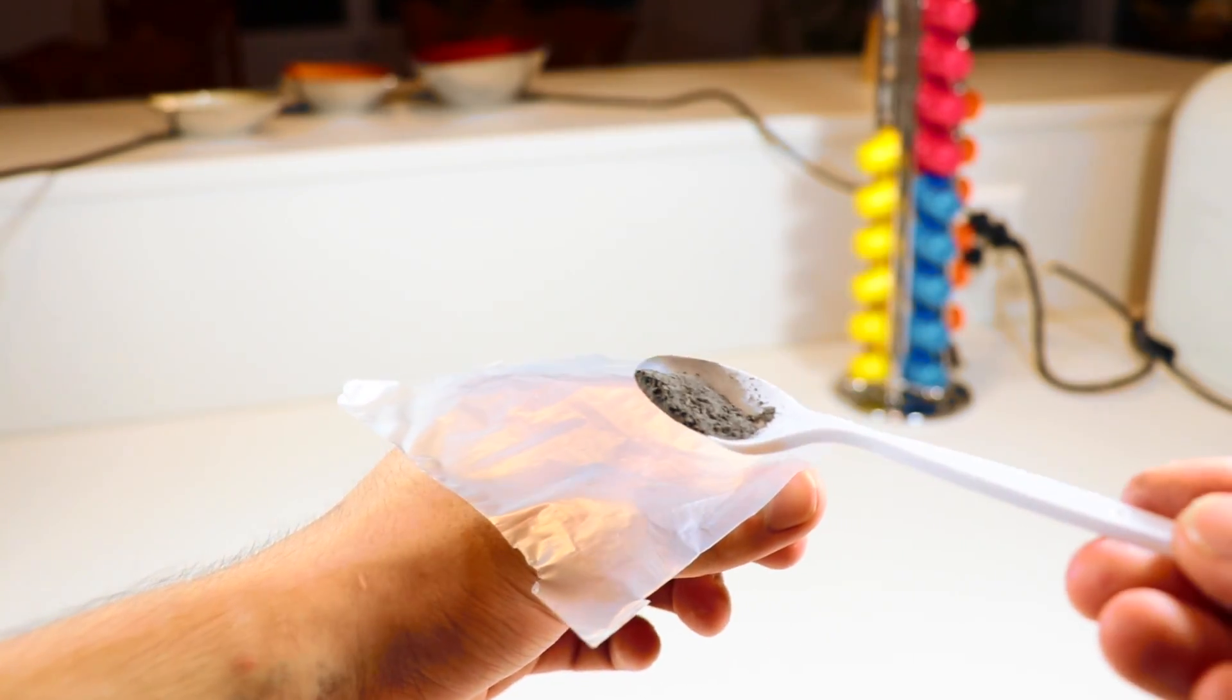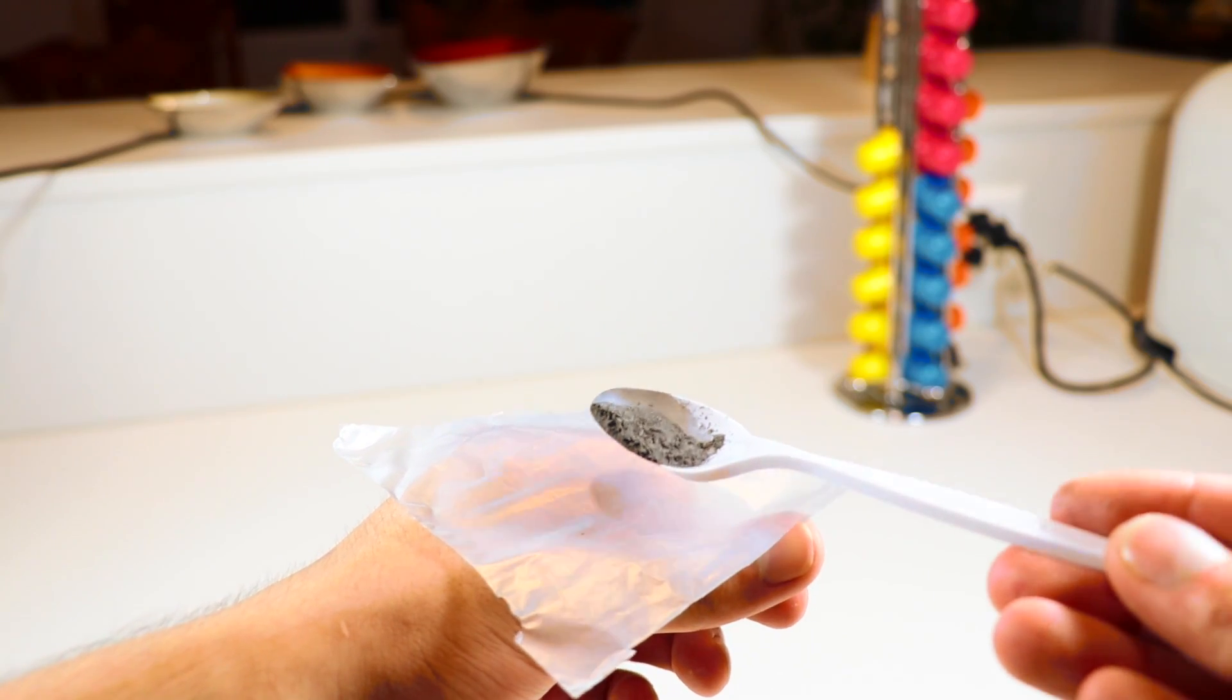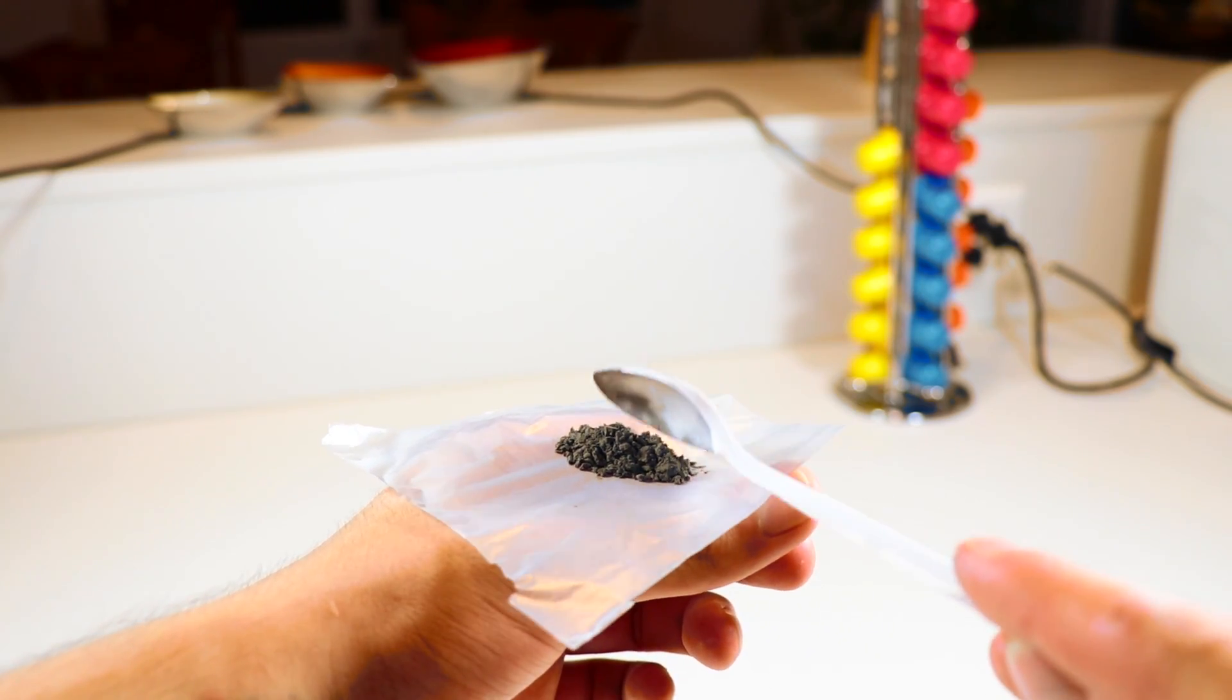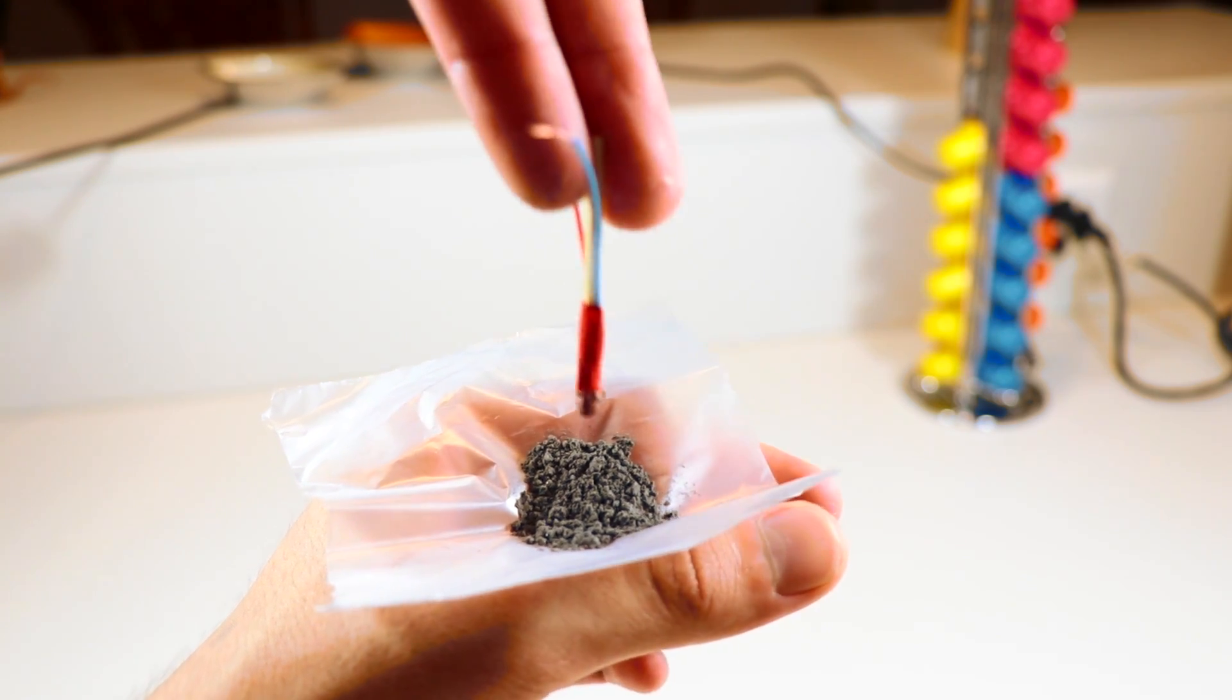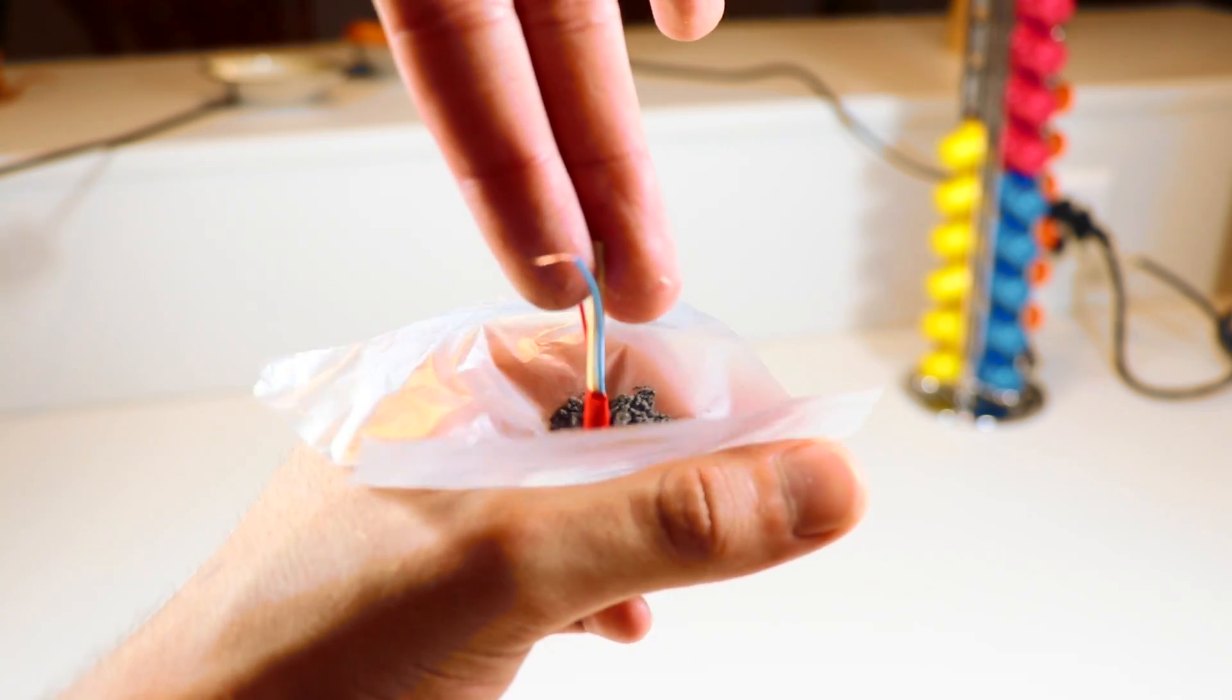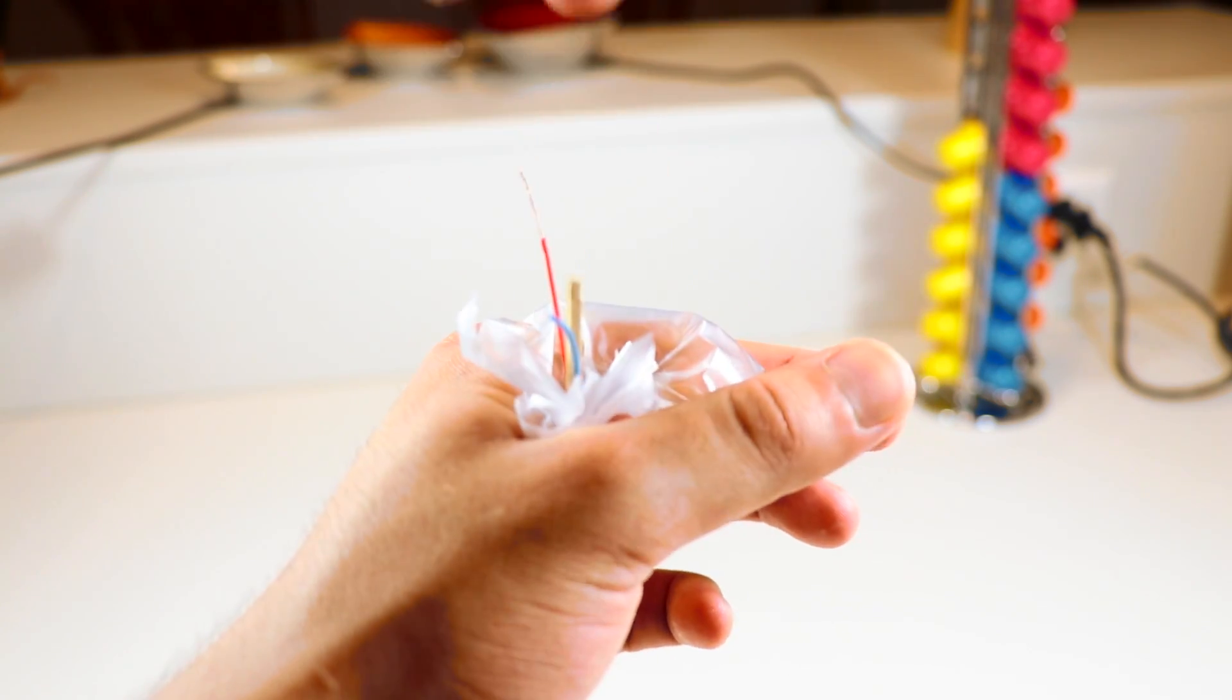Now grab a small spoon of some sort of flash powder or black powder and place it on a piece of plastic or plastic wrap. And now stick the igniter head first into the powder and close the plastic around the match.